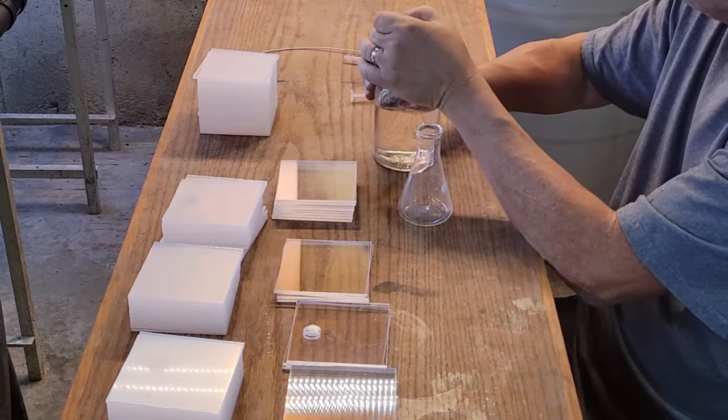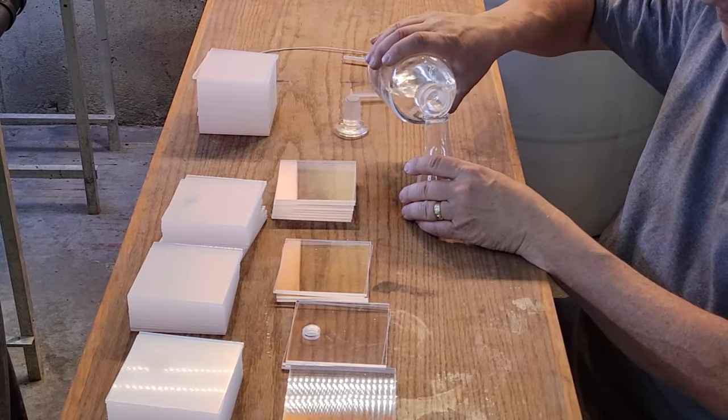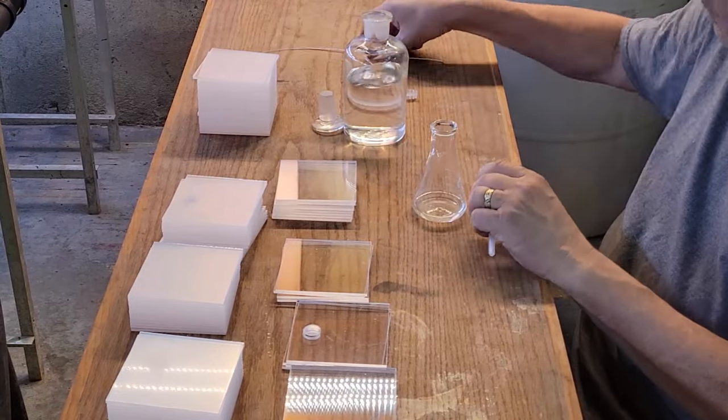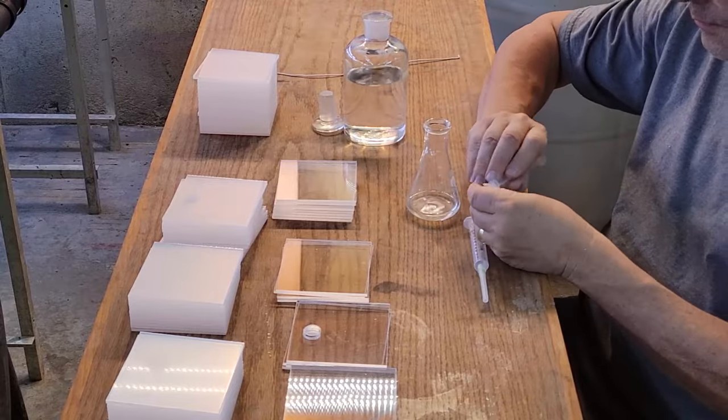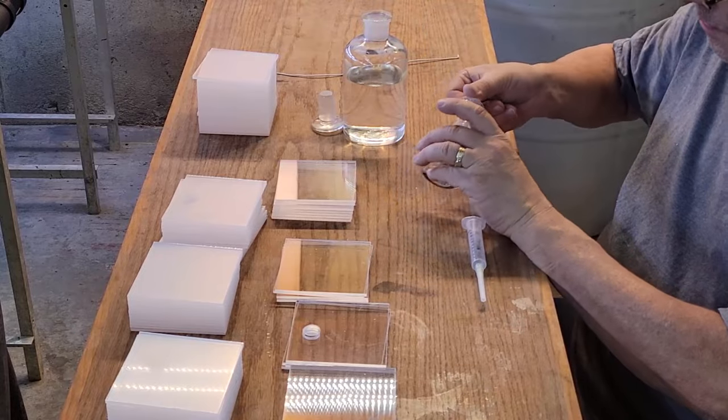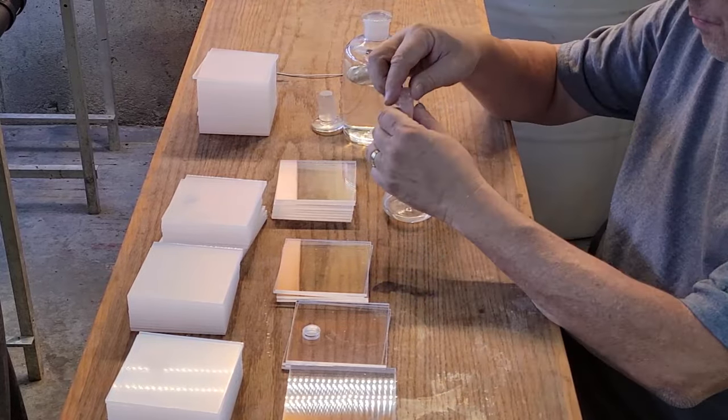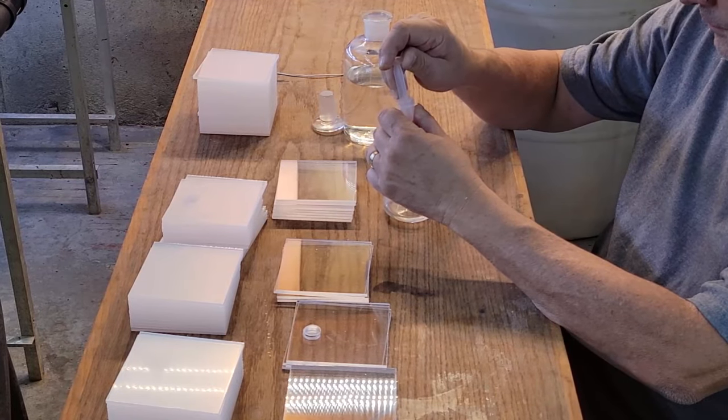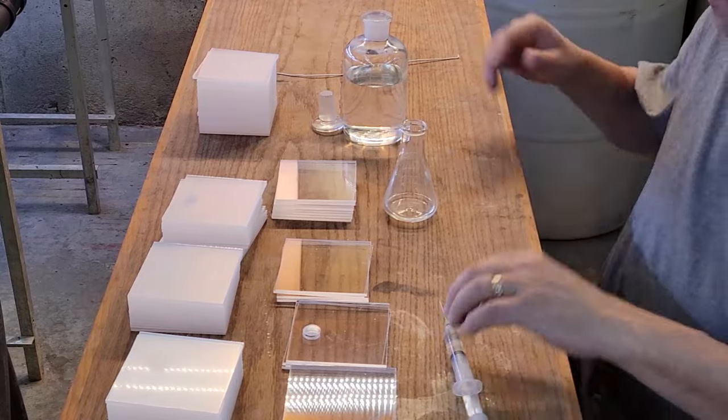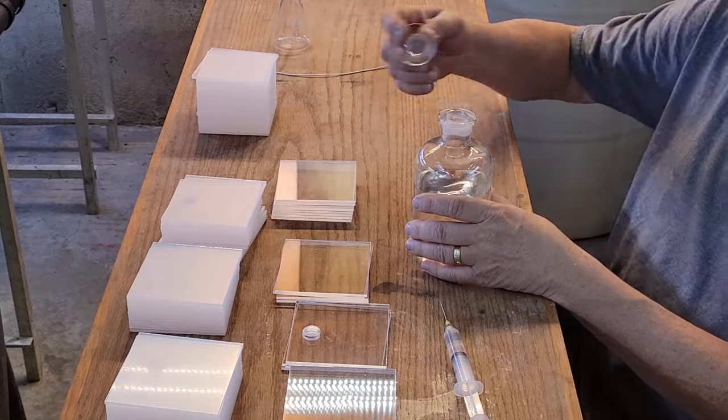I'm going to weld these together with methylene chloride, which I keep in a ground stopper bottle because it would evaporate very quickly due to its high vapor pressure. It's the least odorous way of doing this. You can use Weld-On if you like, but I don't like the smell. Both chemicals are toxic—definitely use high ventilation and don't breathe this stuff in.